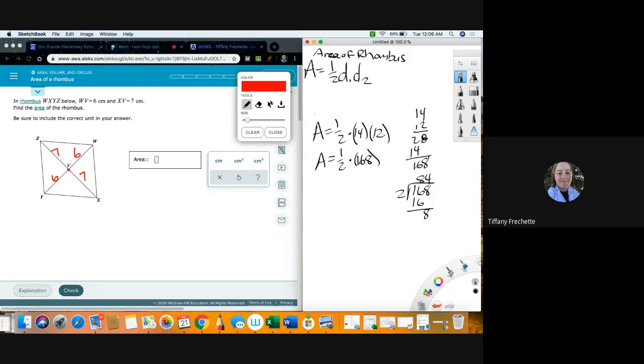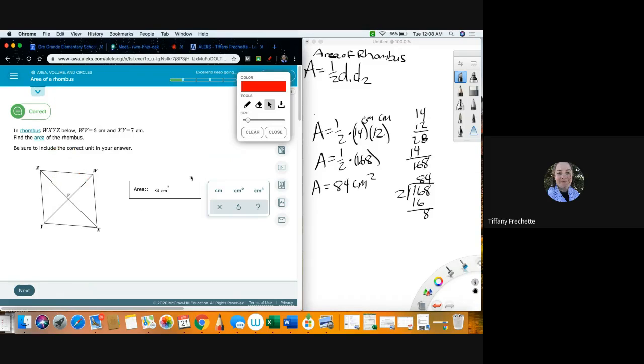All right. So I'm going to come over here and I'm going to type in 84. Now I need to make sure I choose my unit because these were centimeters, areas squared. And the reason for that is because both 14 and 12 had centimeters on them. So centimeters times centimeters means that when we're done here and we get this 84, we have centimeters times centimeters, and we just write that as centimeters squared. Let's go ahead and check. Perfect.